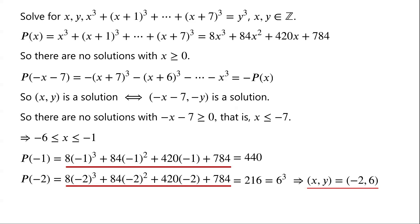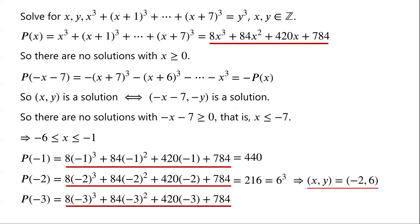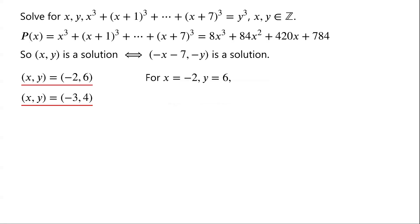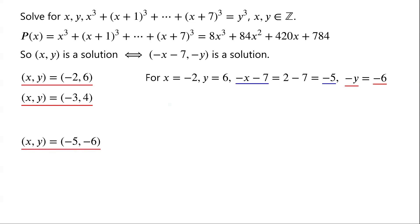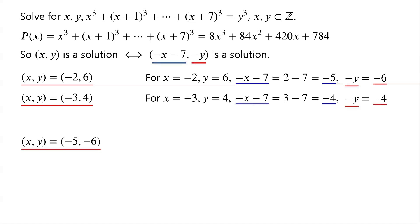When x = −3: p(−3) = 8(−3)³ + 84(−3)² + 420(−3) + 784 = 64 = 4³. So (x, y) = (−3, 4) is a solution. Using the symmetry result: for (−2, 6), the corresponding solution is (−x−7, −y) = (−5, −6). For (−3, 4), the corresponding solution is (−4, −4). So (−5, −6) and (−4, −4) are also solutions.